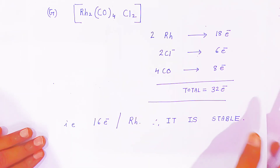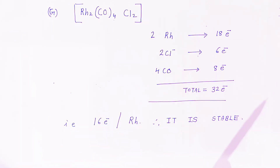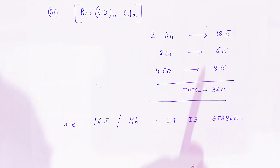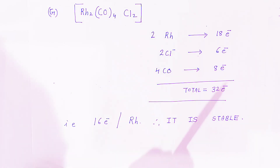These examples are very important from an examination point of view. In an exam, if they ask why a complex is stable even though it does not follow the 18 electron rule, you explain the stability using the 16 electron rule in this way.